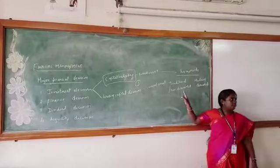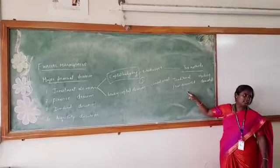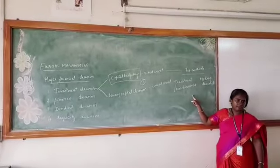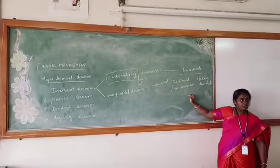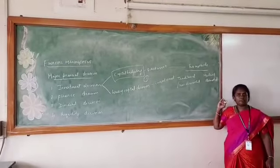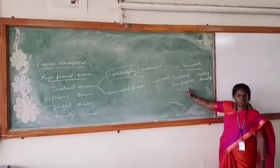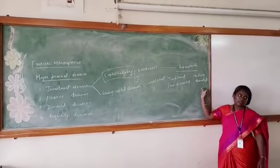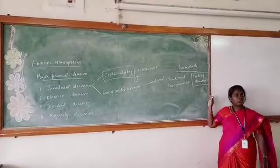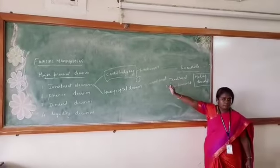The main difference between the traditional method and the modern method is that the traditional method does not consider time value of money, whereas the modern method considers time value of money. Time value of money means that 10,000 today, after 5 years, is still considered the same 10,000 in the traditional method. Almost 20% of funds will use the modern method, which gives accurate results for the organization with respect to investment.